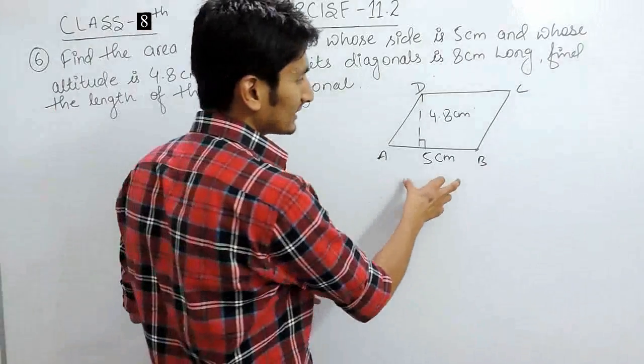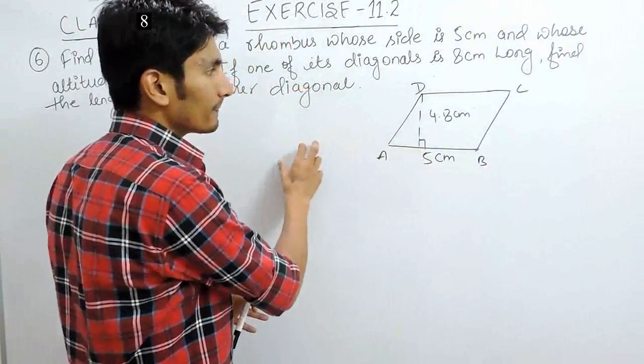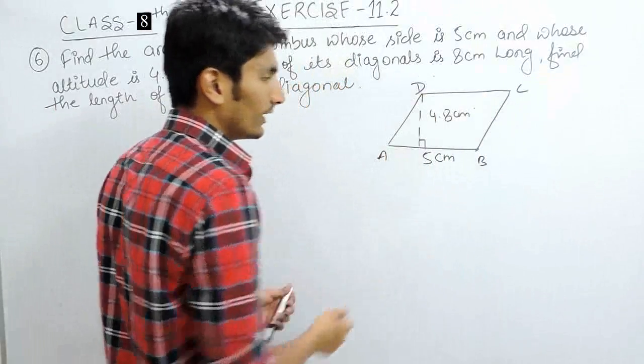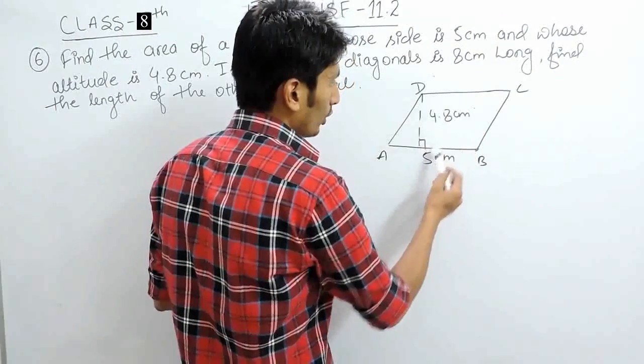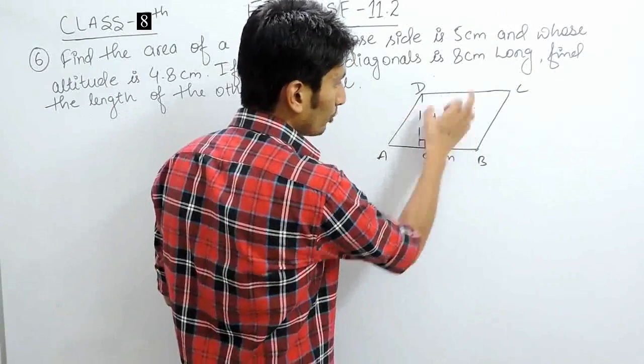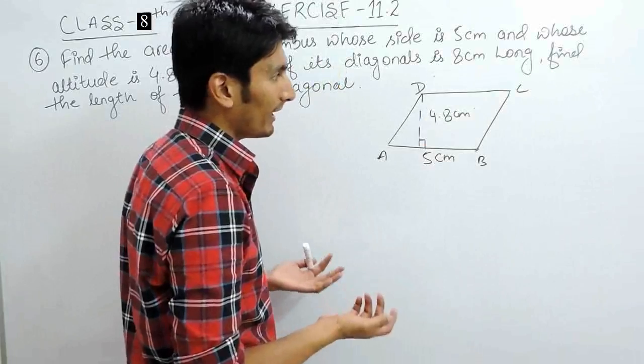Rhombus is nothing but a parallelogram whose all the sides are equal. Parallelogram is basically a quadrilateral having two pairs of opposite sides as equal and parallel.